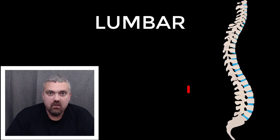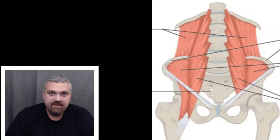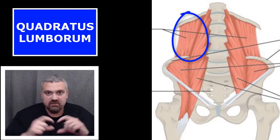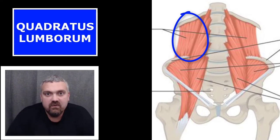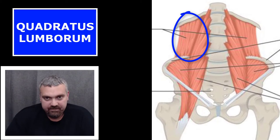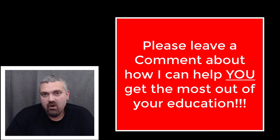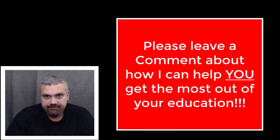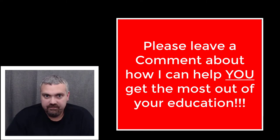The next term is lumbar. Lumbar means loin — think low back. The key muscle example here would be the quadratus lumborum muscle. Quadratus tells us it's a rectangle or square shaped muscle, and lumborum tells us it's in the lumbar region. The QL, or quadratus lumborum muscle, is critically important because it helps connect the low back to your pelvis.